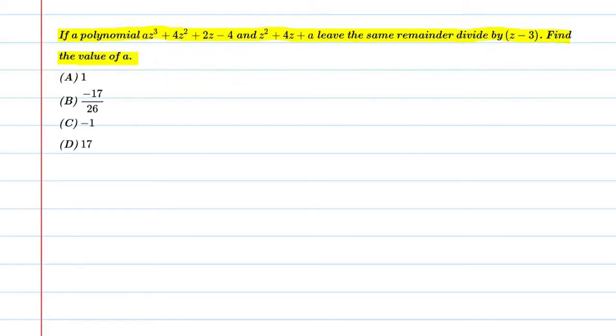This question has been told that this is a polynomial and this is another polynomial. This is the first polynomial p(z) and this is the second polynomial p'(z). When you divide these two polynomials from the next polynomial, the remainder is the same. So tell us what is the value of a.